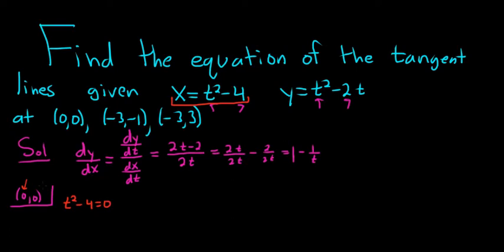At the same time, we know y is equal to 0, so we take t squared minus 2t and set that equal to 0 as well. So we solve both of these equations simultaneously. The first one is pretty easy to solve. You just add the 4, and then when you take the square root, you do get a plus or minus 2. So you get two possible t values.